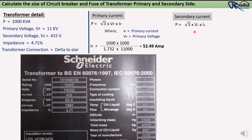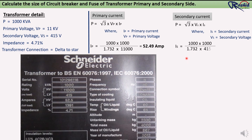The same way we will calculate secondary current. P = √3 × Vs × Is, where Is is the secondary current and Vs is the secondary voltage. Putting all values: Is = (1000 × 1000) ÷ (1.732 × 415) = 1391.24 ampere. You can see the primary and secondary currents written on the transformer nameplate match our calculation: 52.49 A and 1391.24 A.